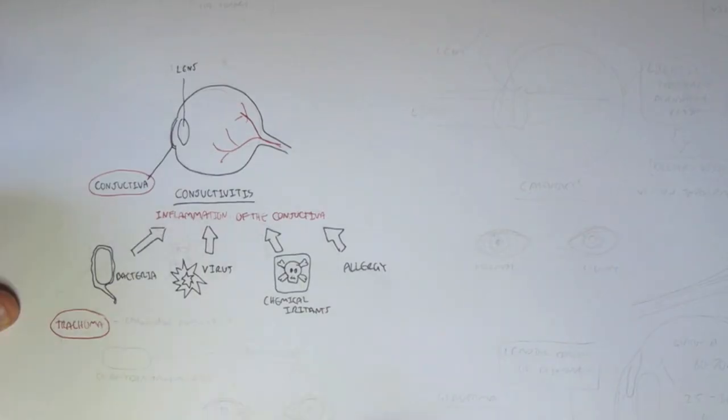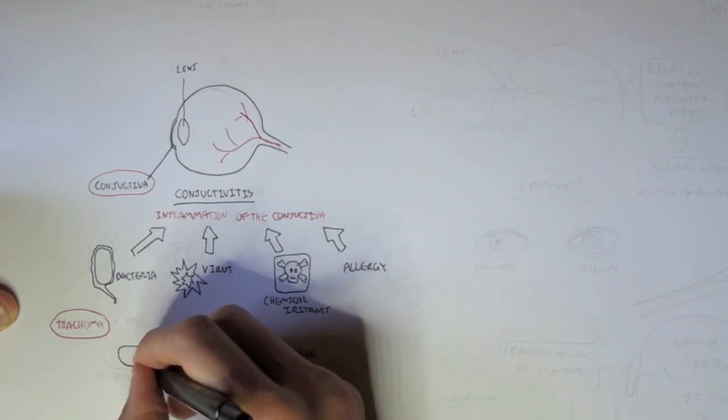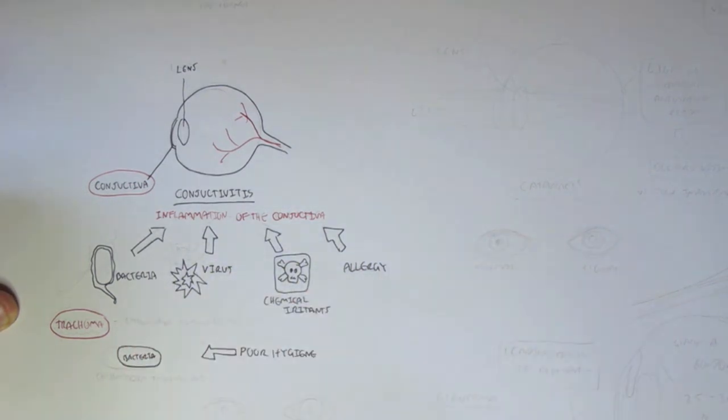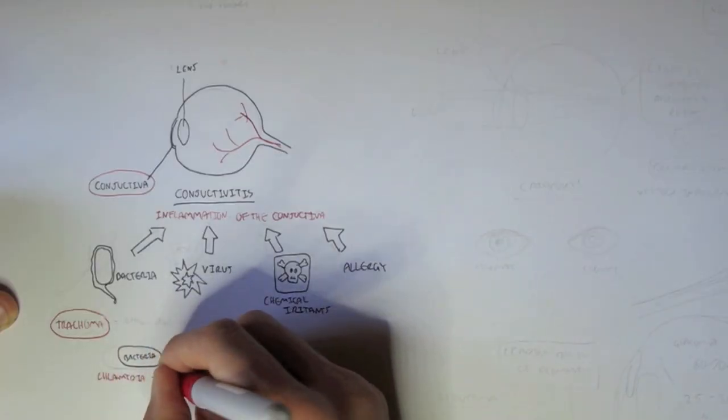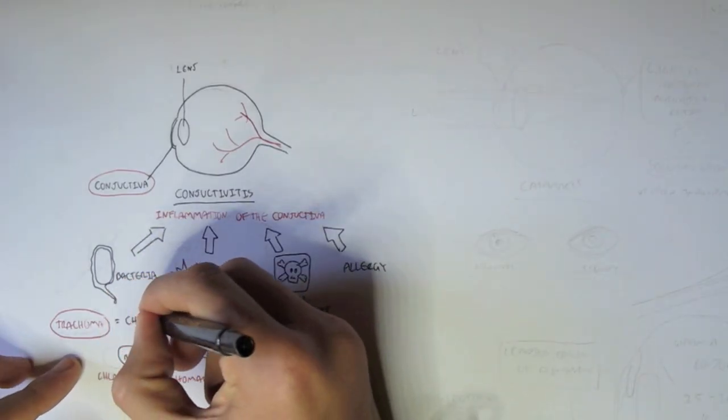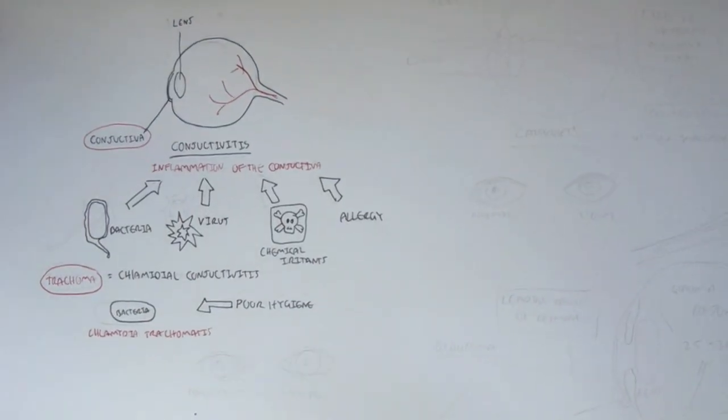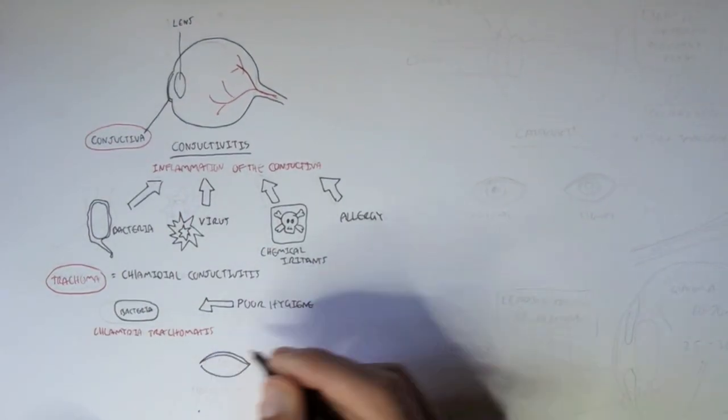Trachoma, also known as granular conjunctivitis, is a leading cause of blindness from infections. And it's caused by poor hygiene, where bacteria known as chlamydia trachomatis can cause trachoma. And that is why trachoma is sometimes known as chlamydial conjunctivitis.